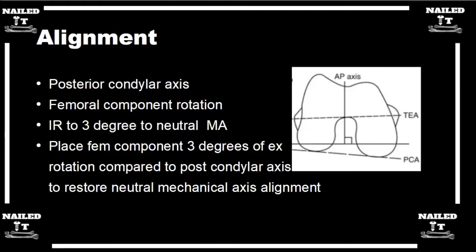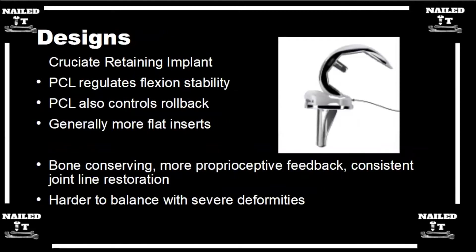Can you go over the different types of designs, like the posterior stabilizing and cruciate retaining? There are a couple of different designs, and they may sound a little confusing because there are so many different ones. A lot of designs that don't have a box cut are very similar — it's a lot of marketing tactics by companies. The main thing we're going to look at is constraint, classifying implants from low constraint to high constraint.